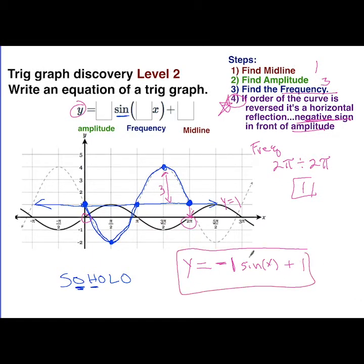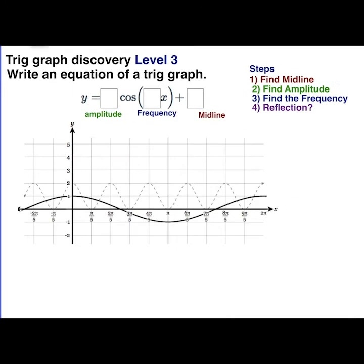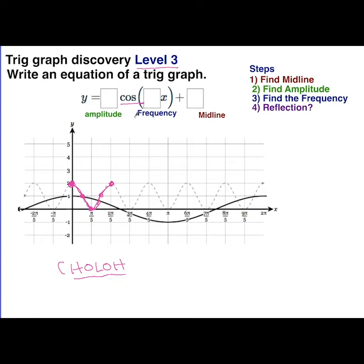Let's look at another one — this is what we call level three. The steps are still the same. Starting here and going through one complete cycle, it uses cosine: CHOLO — high, origin, low, origin, high. This order is not reversed; it starts high, goes through the origin to low, back through the origin, ending on high before it repeats. So the amplitude is one.